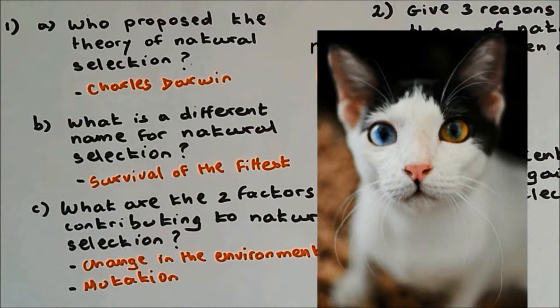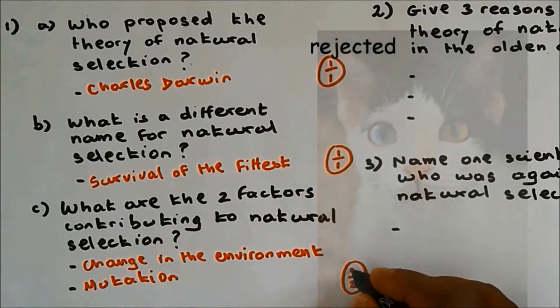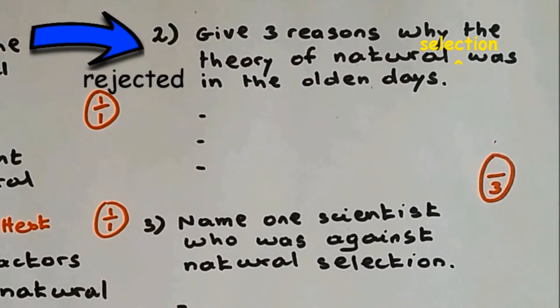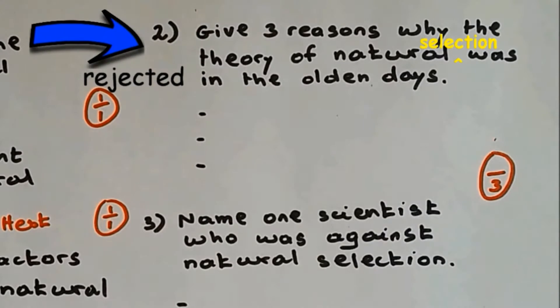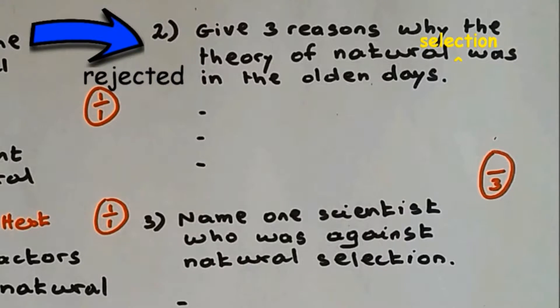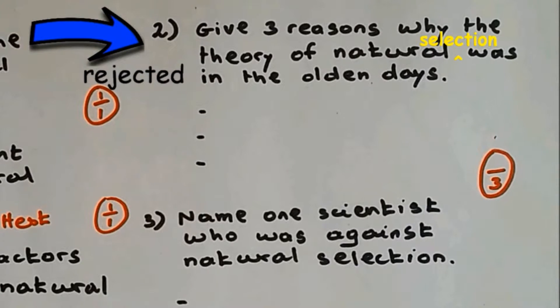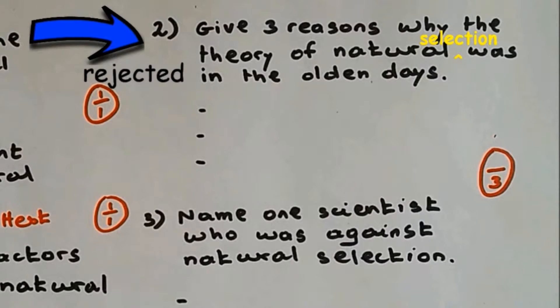Question number 2: Give three reasons why the theory of natural selection was rejected in the olden days. The first reason is because his theory was against religious beliefs. And the second reason is because he could not explain the formation of new characteristics.